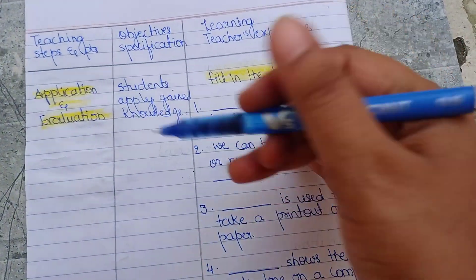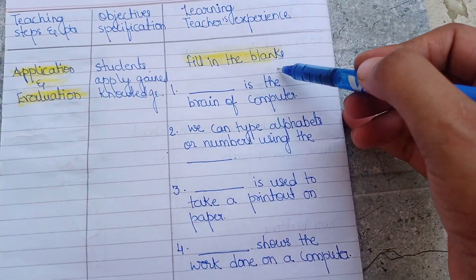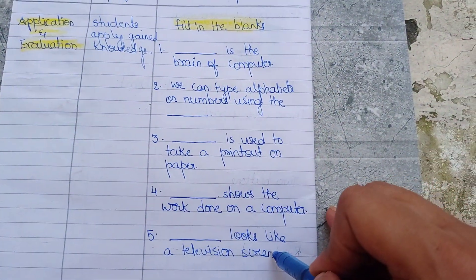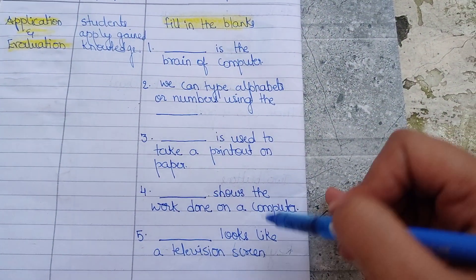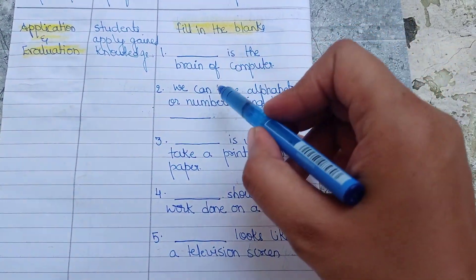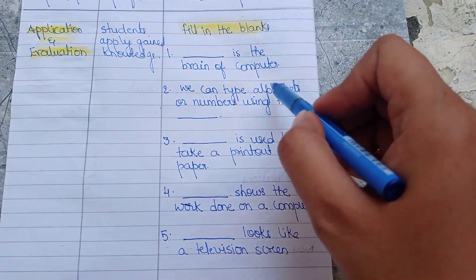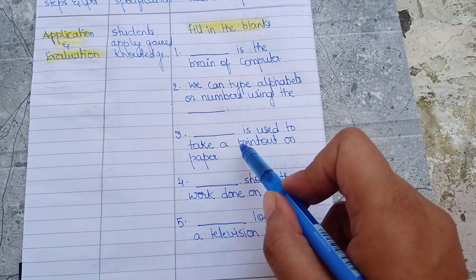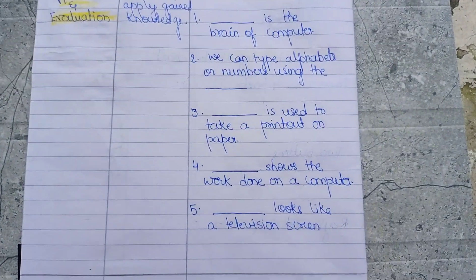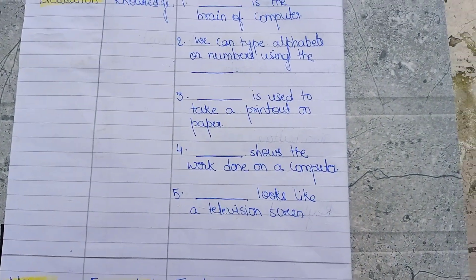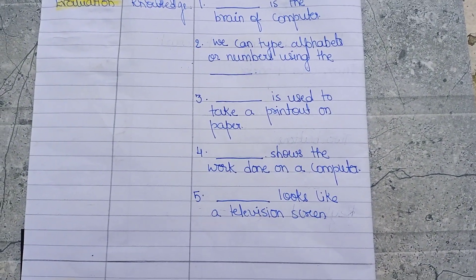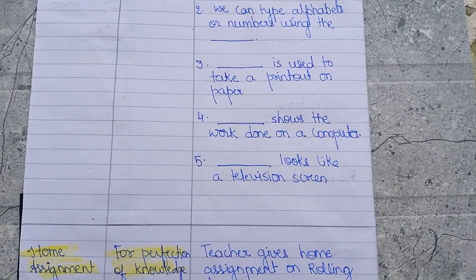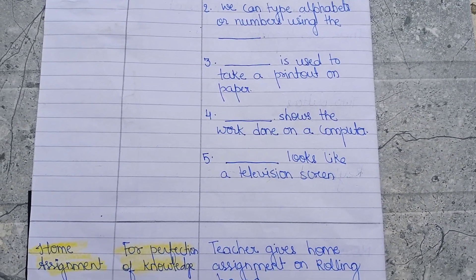Last page covers Application and Evaluation — fill in the blanks with five items: 'Dash is the brain of computer.' 'We can type alphabets or numbers using dash.' 'Dash is used to take a printout on paper.' 'Dash shows the work done on a computer.' 'Dash looks like a television screen.'